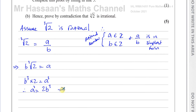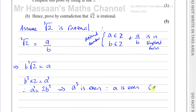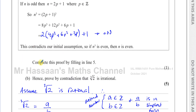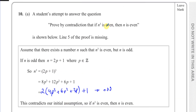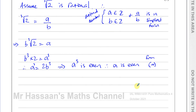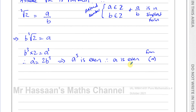Now if a cubed equals 2b cubed, and b is an integer, that means a cubed is even — because two times an integer is even. So a cubed is even. Therefore we can say a is even, and that's using the result from part A. From part A of the question, we basically proved that if n cubed is even, then n is also even — that's where the "hence" comes from. So we've now proved that a is even: if a cubed is even, then a is even.